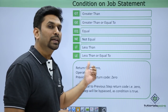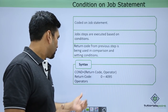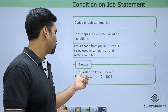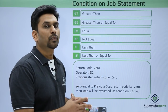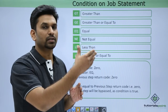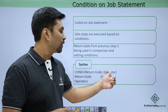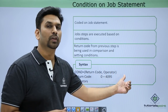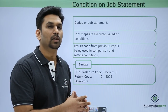Now let's see how the system reads this. Suppose we have given return code as 0 and operator as equal to in the job statement — condition equal to 0. The first step will be executed automatically and we get a return code from it. If the return code from step 1 is 0, it checks 0 equal to 0, which is true. When the condition is true, that step will be bypassed and execution proceeds to the next step.